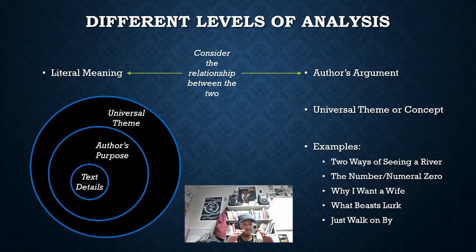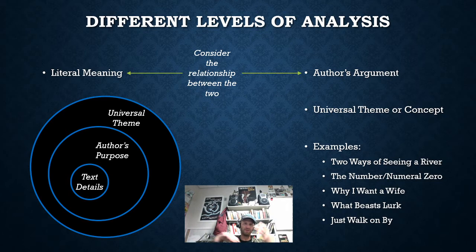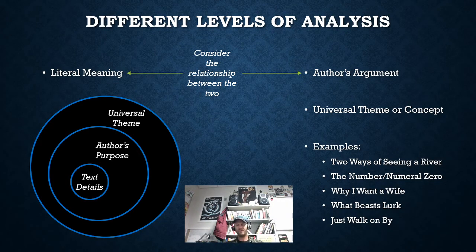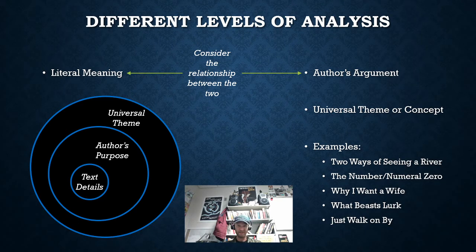There are these little circles that show the different levels of how your brain works. There's what's in the text itself, there's what connects to the author's purpose, and then how that relates to the entire rest of the world — the more universal ideas connecting throughout the entire world, connecting throughout time, through human history.